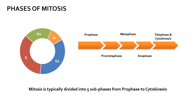Normal cells spend very little time in mitosis, although this varies cell to cell. A lot of very important processes take place within this phase. Mitosis is typically divided into five sub-phases, the first of which is prophase, and the last, separation of the daughter cells, is cytokinesis.